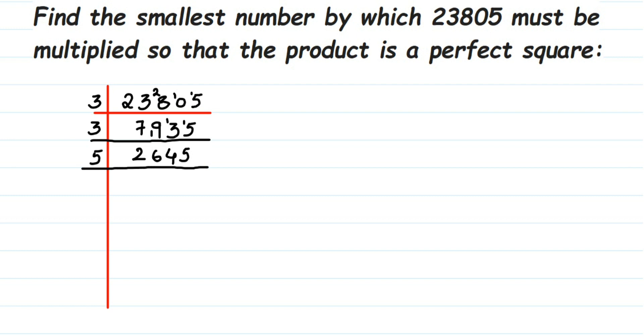Now this number goes into 5; it doesn't go in 3. 5×5 is 25, 1 is the remainder, that makes 14. 5×2 is 10, so 4 is the remainder, that makes 45. Then 5×9 is 45.